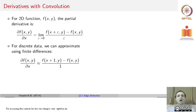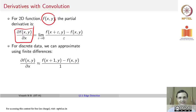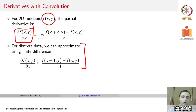Our challenge is how to get these derivatives using convolution. We understand edges can be obtained using derivatives or gradients. From first principles, the partial derivative of f(x,y) with respect to x is the limit as epsilon tends to zero of f(x+epsilon, y) minus f(x,y) divided by epsilon. For discrete data, x plus epsilon may not be defined, so we define the partial derivative as f(x+1, y) minus f(x, y) divided by 1. That is the discrete definition for the derivative.